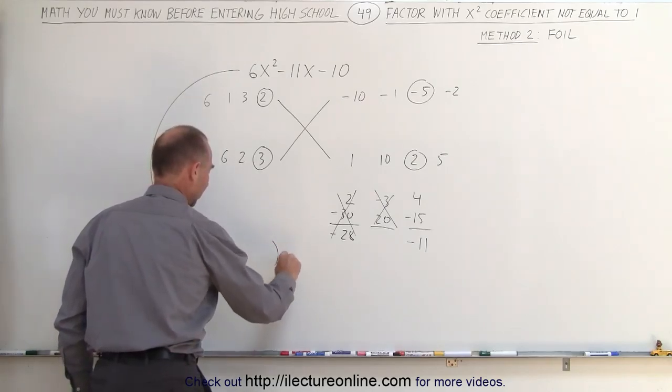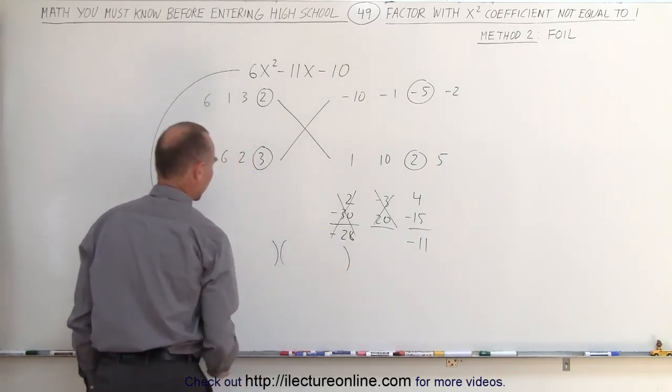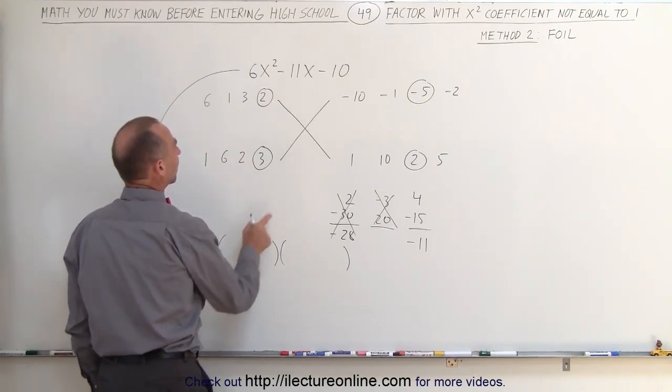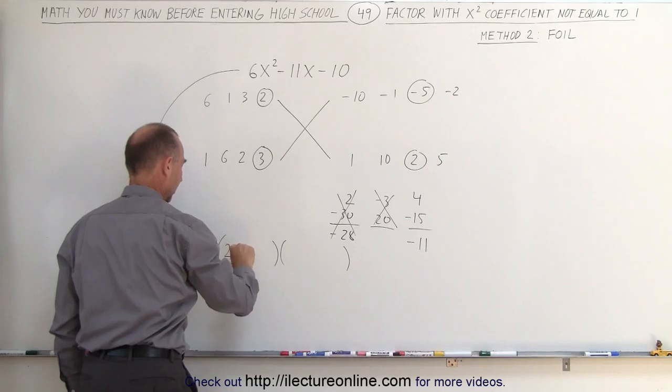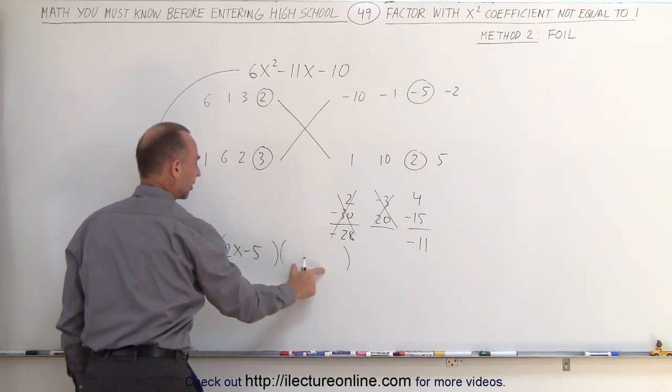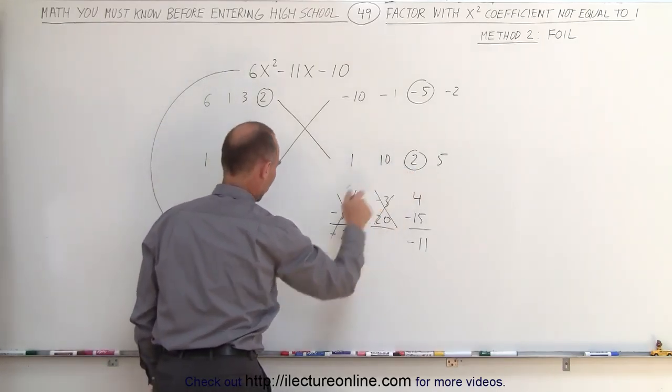First draw my parenthesis like this. And this term I get 2x minus 5. And on the second binomial right here I get 3x plus 2.